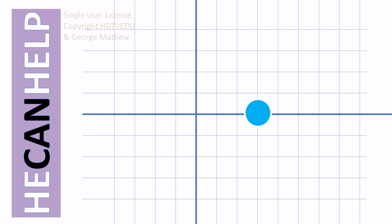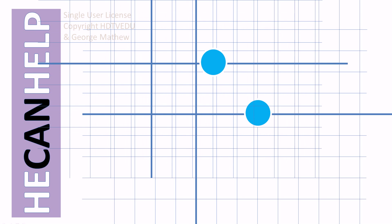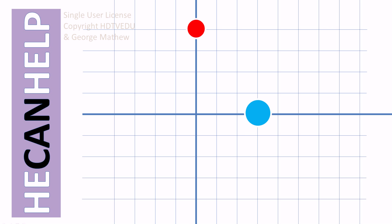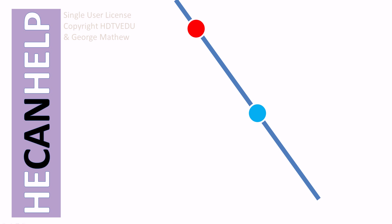Here is our graph paper. On the x-axis: 1, 0; 2, 0; and 3, 0 — so here is our point (3, 0). For the y-intercept (0, 4): counting up the y-axis, this is 1, 2, 3, 4 — so here is (0, 4). We have (0, 4) and (3, 0). Now we join those two points and we have the line.